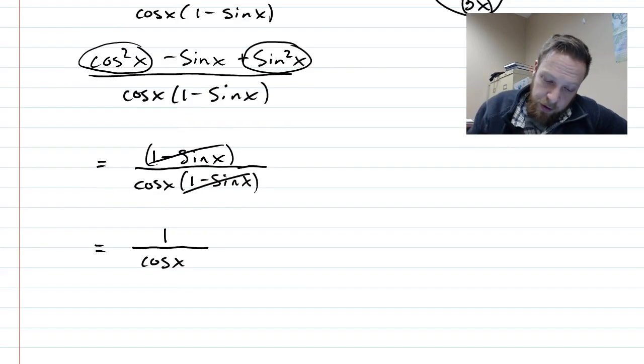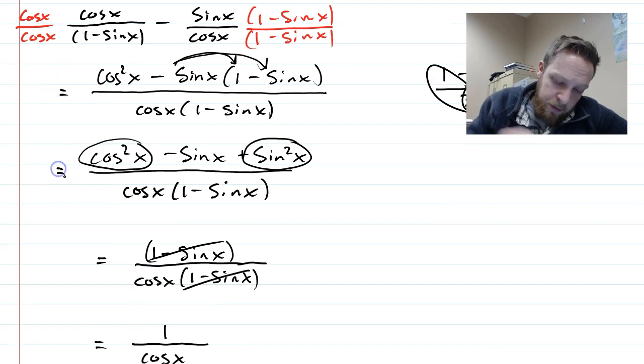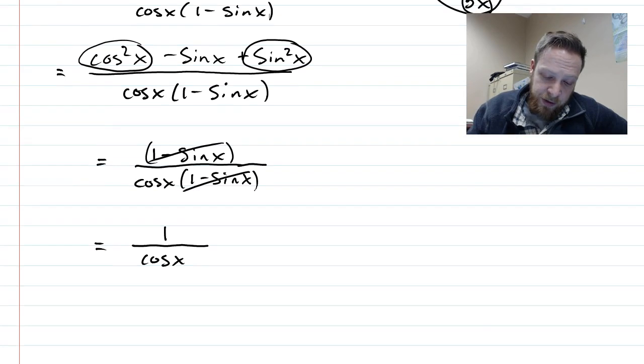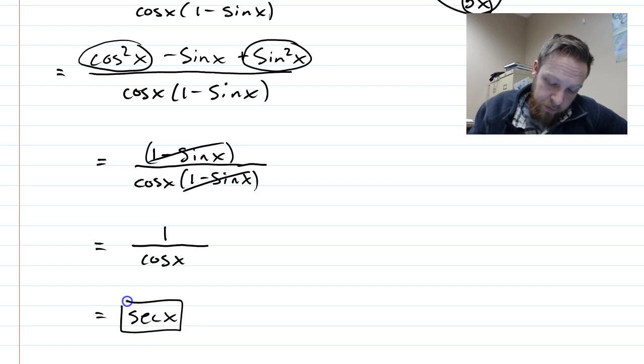Okay, so as I go along here, I really should have been putting some equal signs here, because we're just rewriting, rewriting, rewriting, and it's getting simpler and simpler until we can finally write just secant of x.